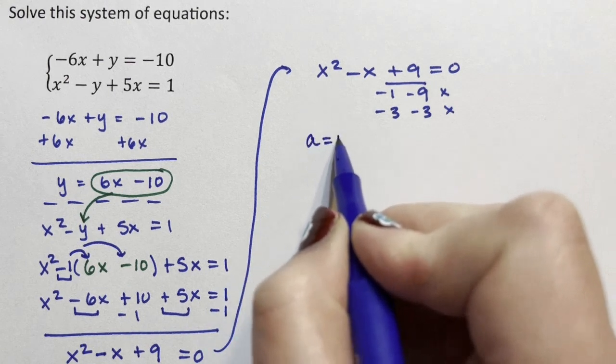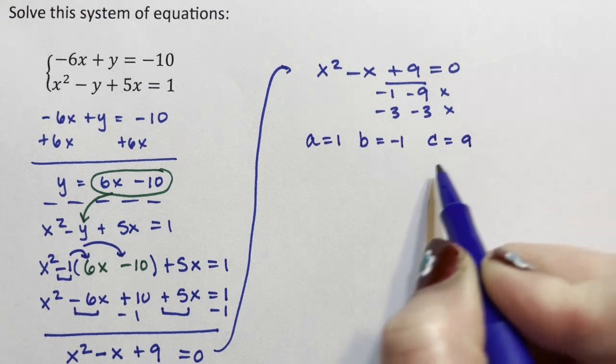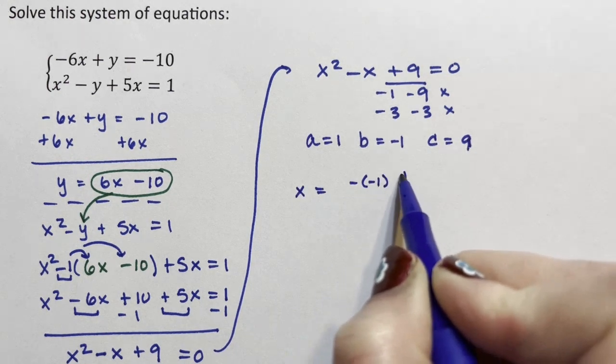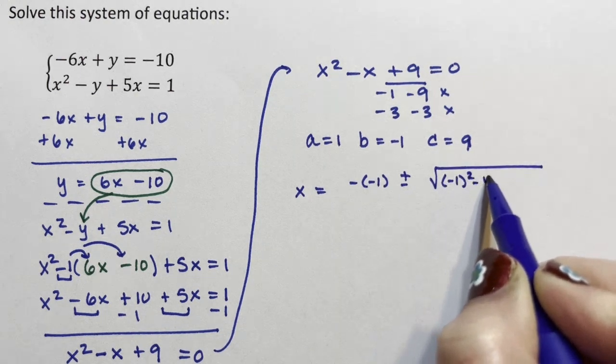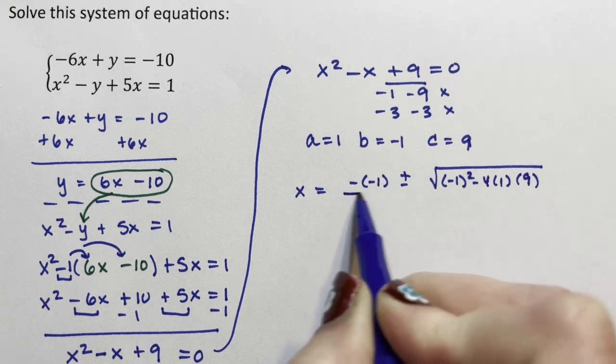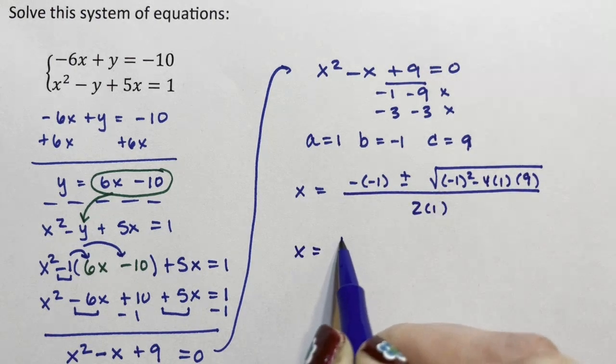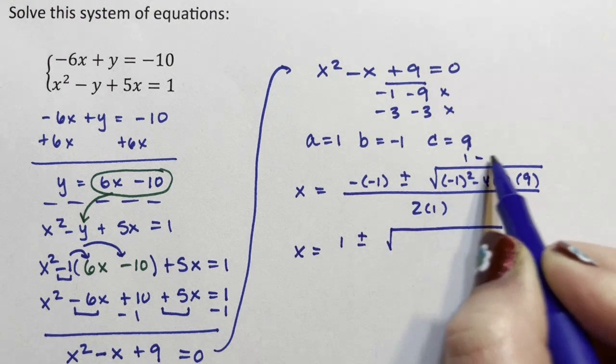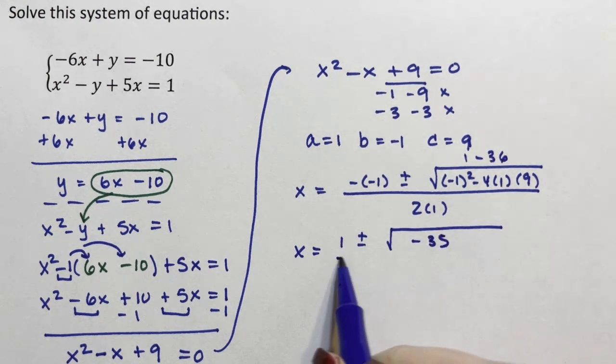So a is equal to 1, b is equal to negative 1, c is equal to 9, and x is equal to negative b plus or minus the square root of b squared minus 4ac all over 2a. x is equal to 1 plus or minus the square root of, this is 1 minus 36, so negative 35 all over 2.